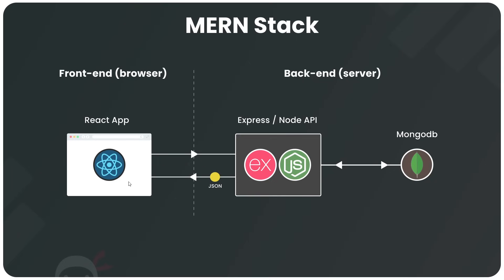Now you might be thinking: what's the point of this middle Node API step to fetch the data? Why not reach out directly to MongoDB and skip this middle bit entirely? The answer is that if you do that, you'd be exposing sensitive data in your front-end code in the browser — such as an admin username and password to access your database. By putting that logic in the back end instead, you're hiding that sensitive code from people who use your website.